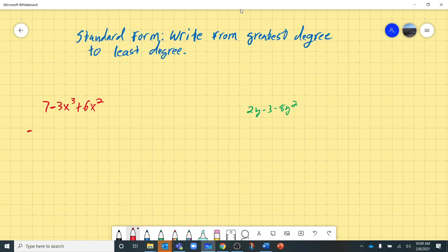So in order, this would be negative 3x cubed plus 6x squared plus 7. That's how we would rewrite it in standard form for the polynomial.